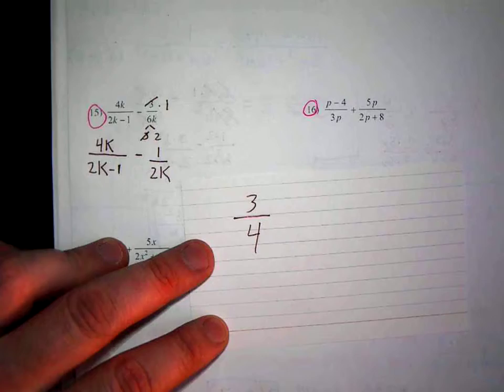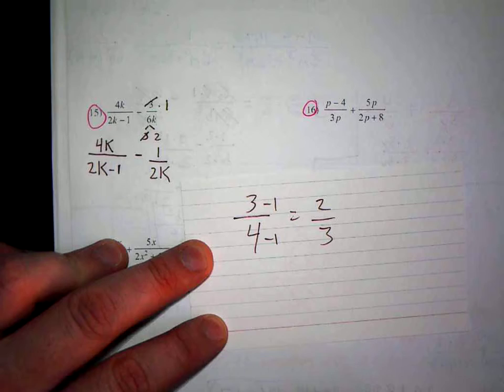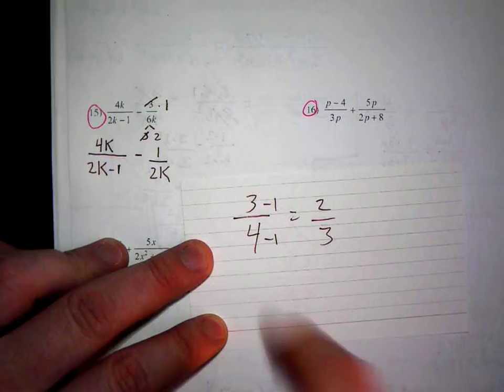You get 2/3. Is 3/4 and 2/3 the same thing? 2/3 is 67%, and this is 75%. So that is not something legal you could do.